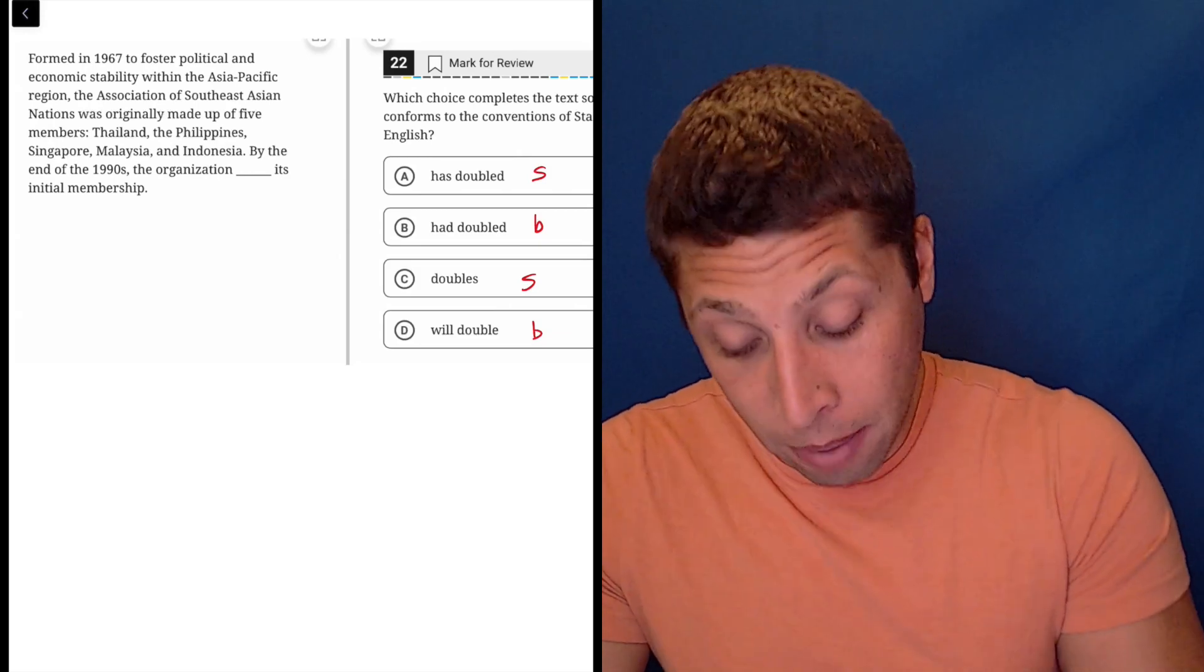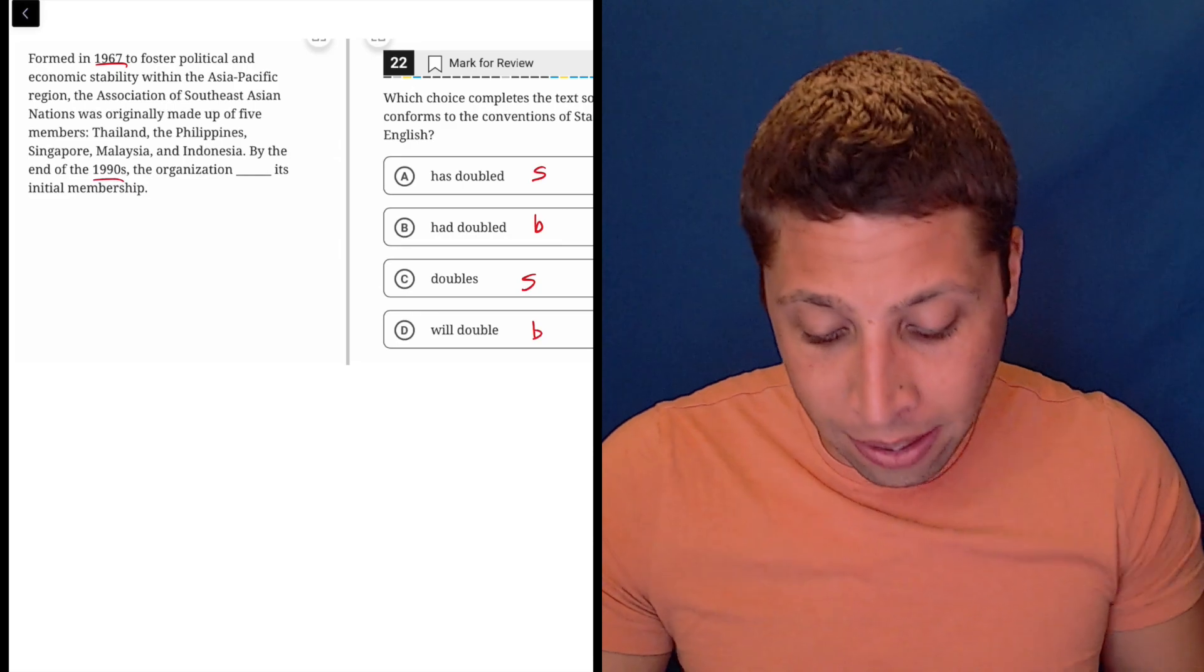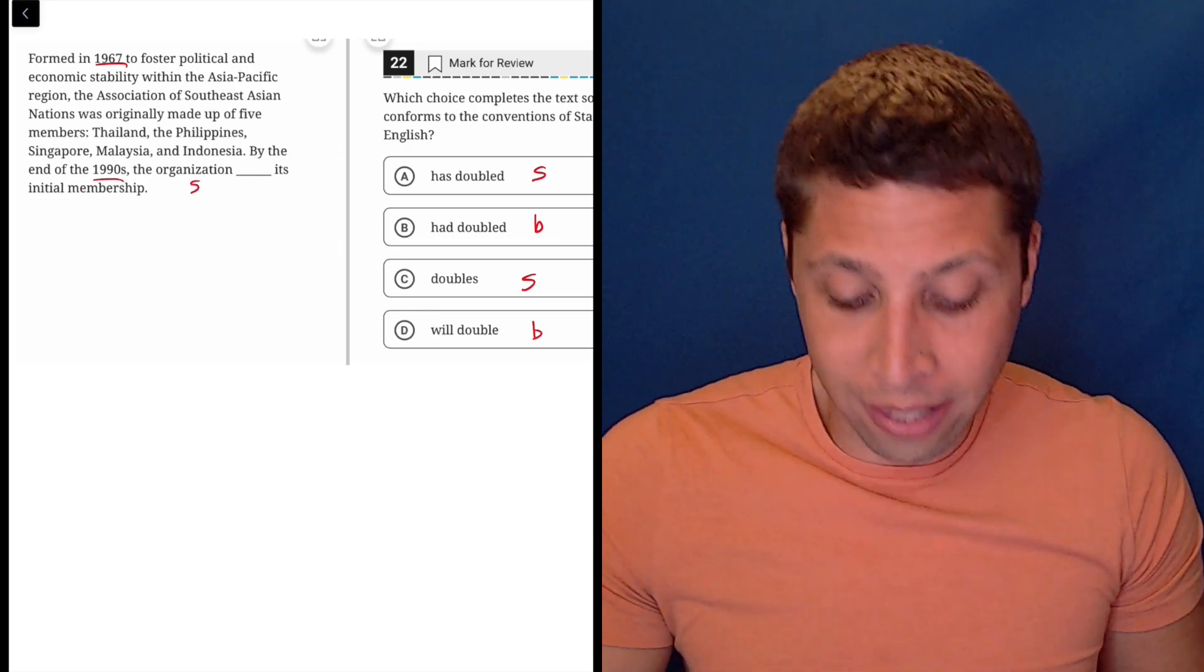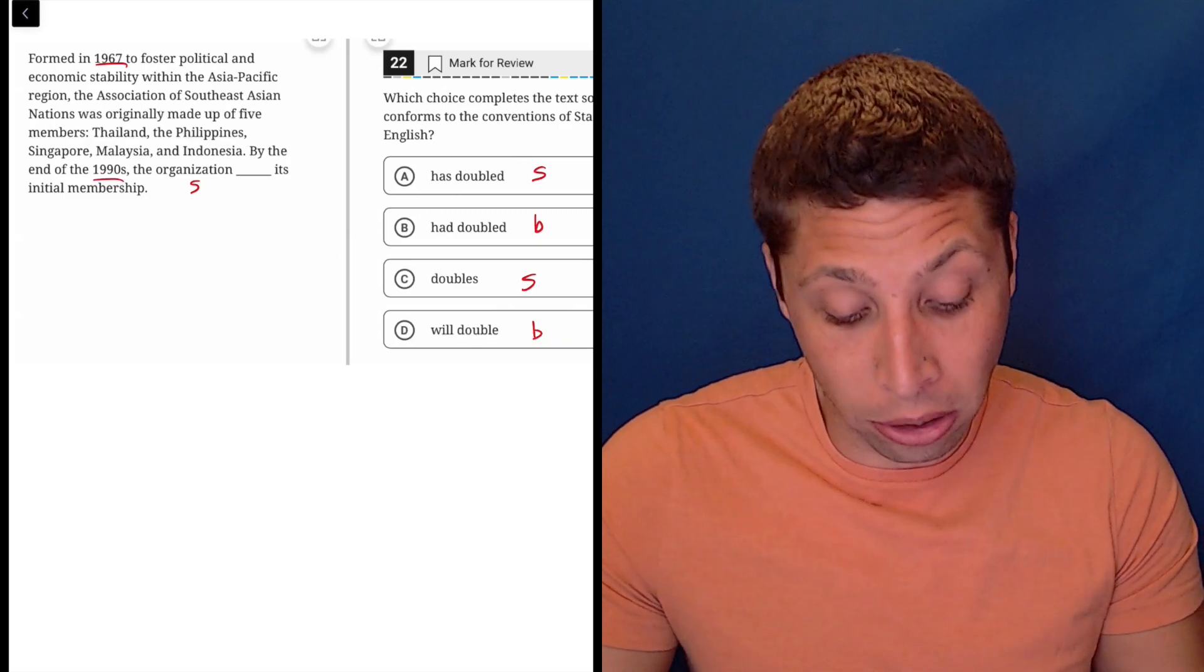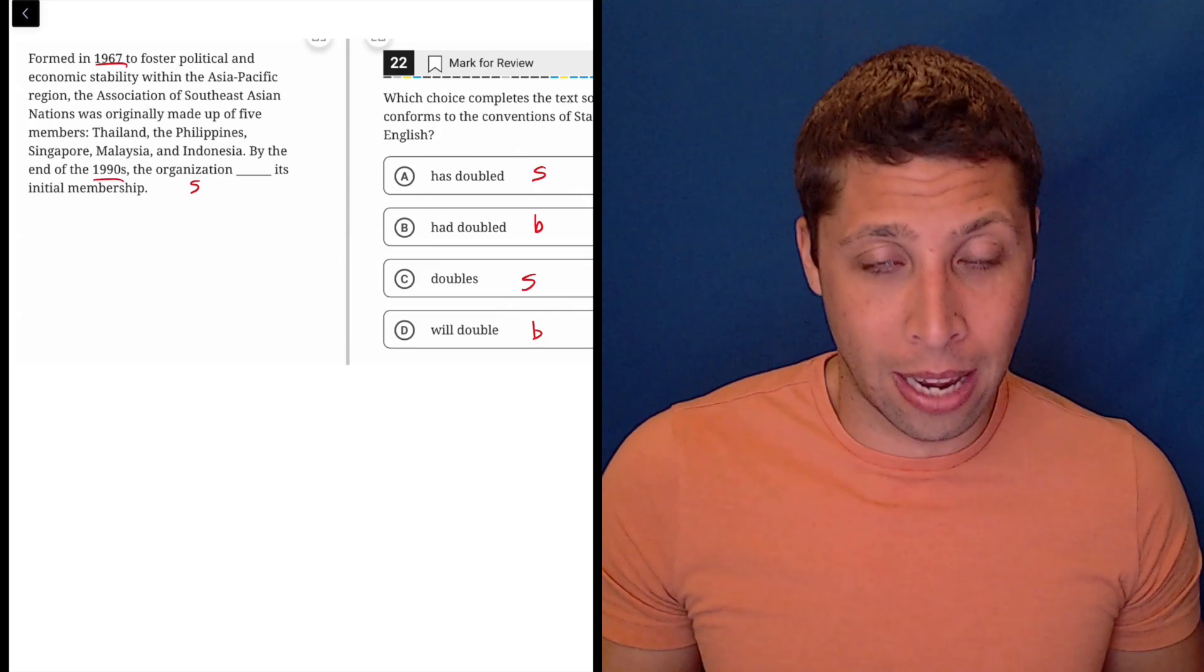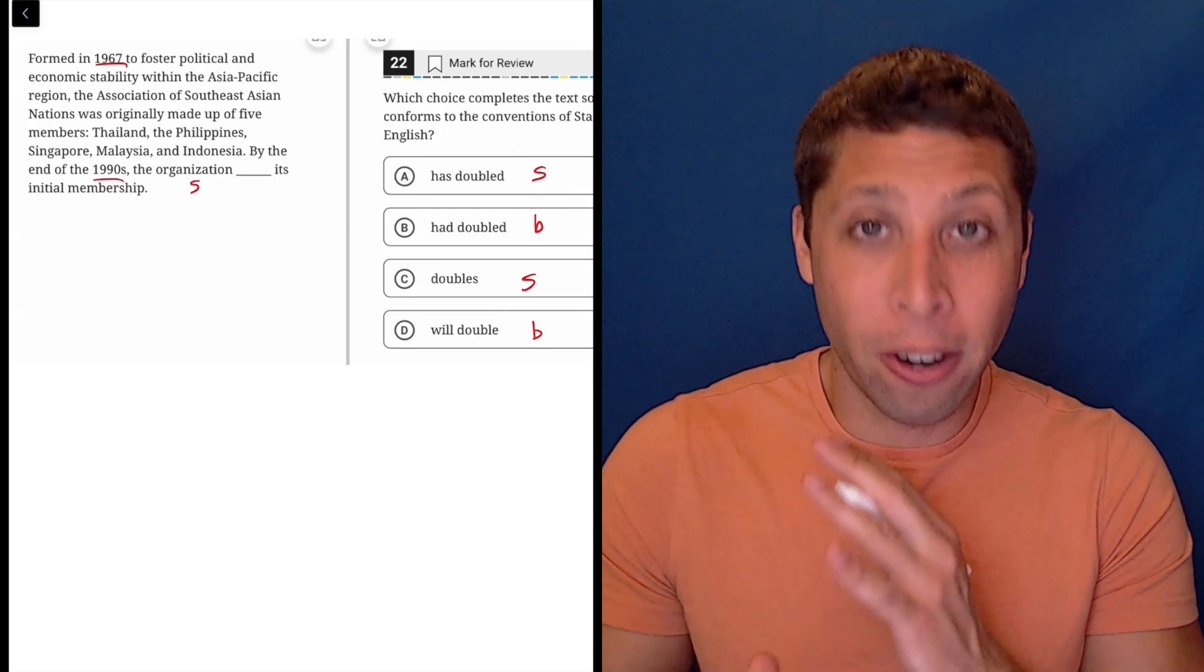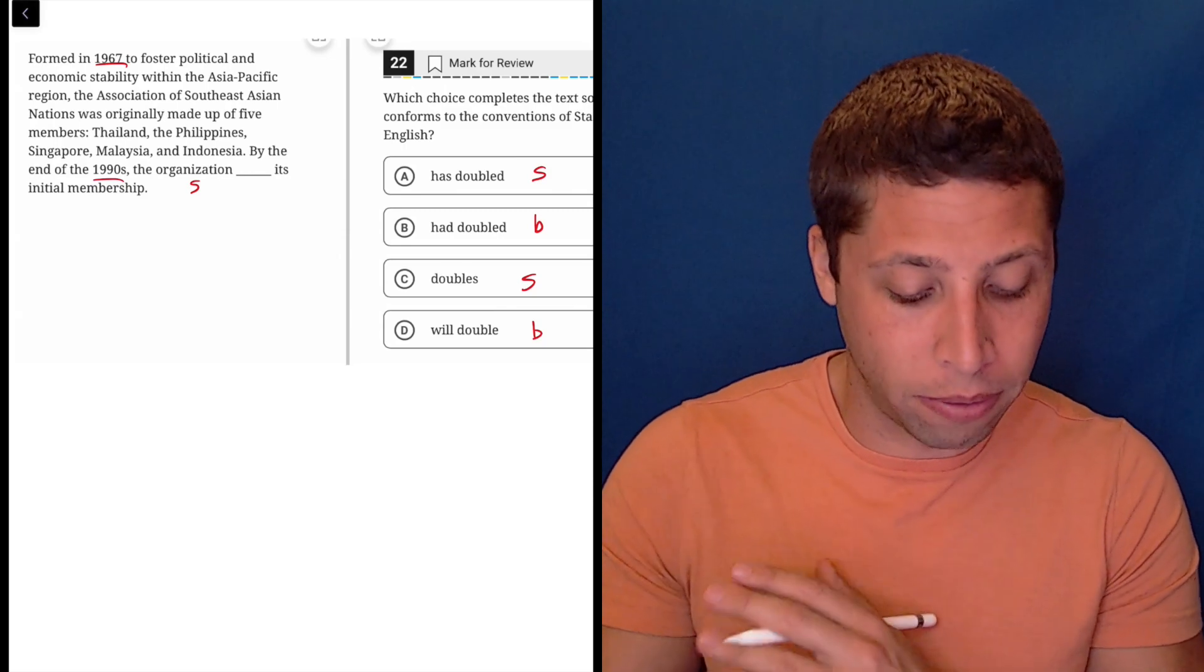Well, so there's definitely time happening, right? 67 to 1990s. It's singular because it's the organization. So that doesn't eliminate any choices. That could mean that A and C are right because they're singular, but it could also mean B and D are right because for those, singular and plural are going to sound the same. So the only reason I would have cared about this is if it was plural, then I would have been able to get rid of A and C. But here we're purely about tense.